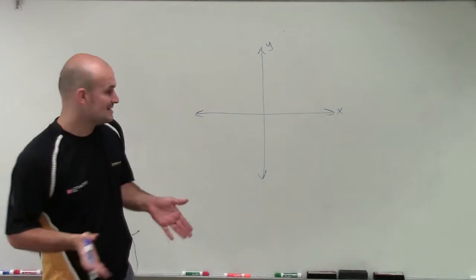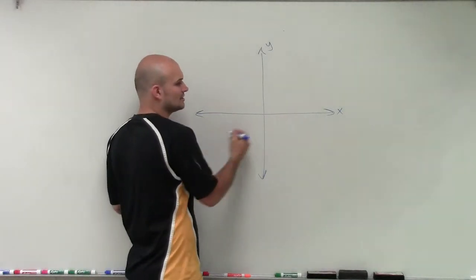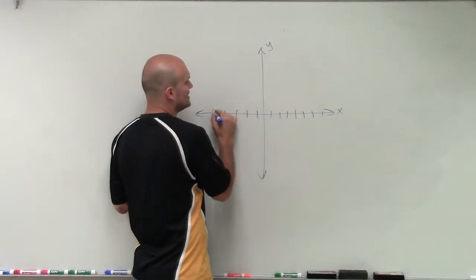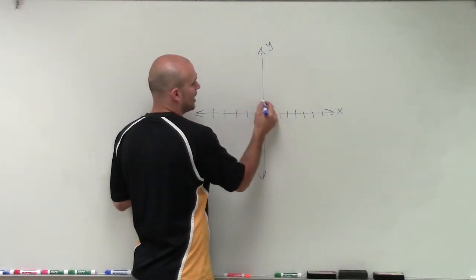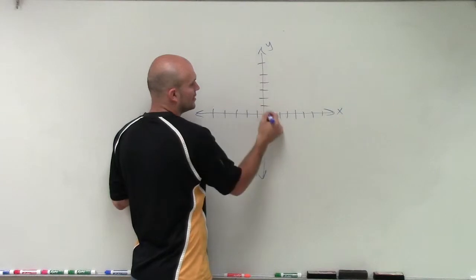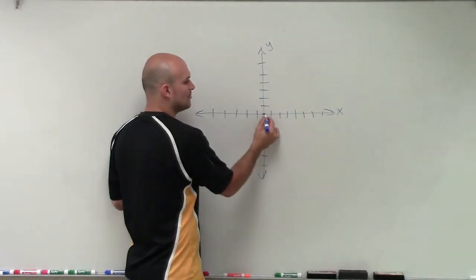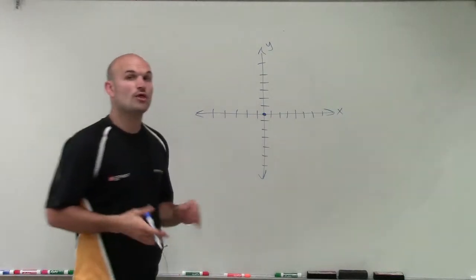And each one of these axes is kind of like a number line, where going to the right is positive, to the left is negative. For the y-axis, going up is positive and going down is negative. And there's that point which we call 0, 0, which we call the origin.